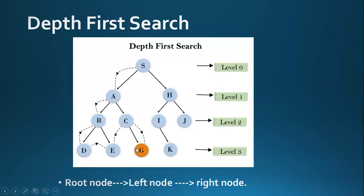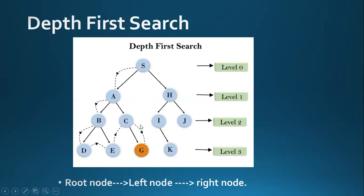DFS is complete within finite state space as it expands every node within a limited search tree. The time complexity of DFS is equivalent to the number of nodes traversed by the algorithm. DFS needs to store only a single path from the root node, so the space complexity of DFS is O(bm). The DFS algorithm is non-optimal as it may generate a large number of steps or high cost to reach the goal node.